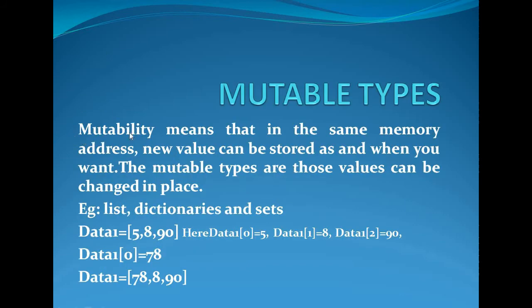Mutability means the value will be stored in the same memory location even if the value changes. For example, a list data stores 5, 8, and 10 — data[0] = 5, data[1] = 8, data[2] = 90. When we change the value of data[0] to 78, instead of 5, the value 78 is written in the same location, while 8 and 90 remain.